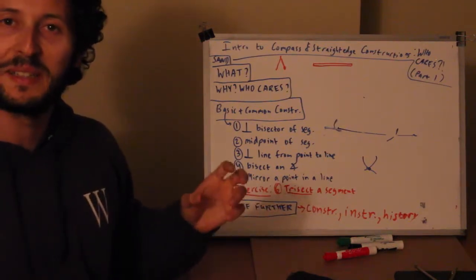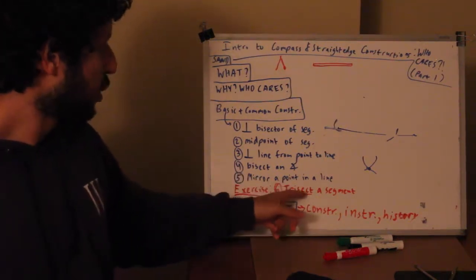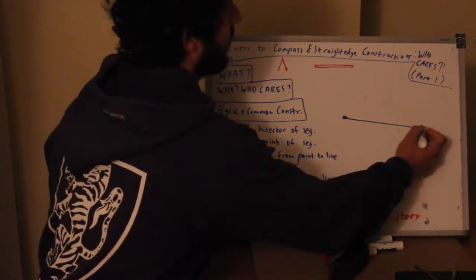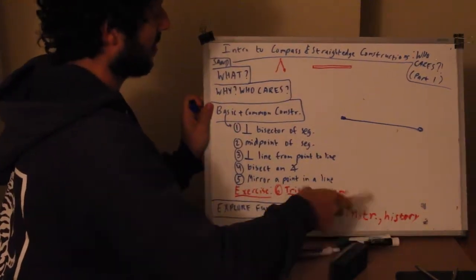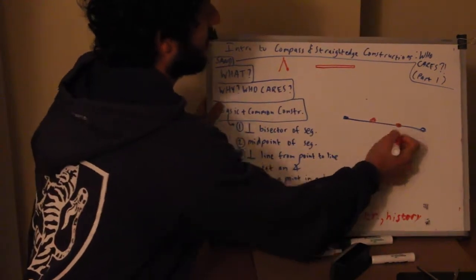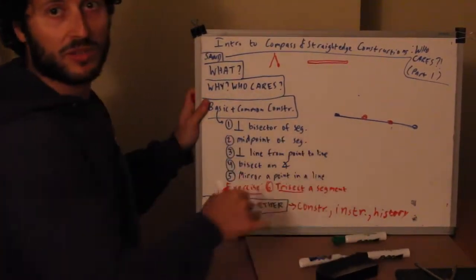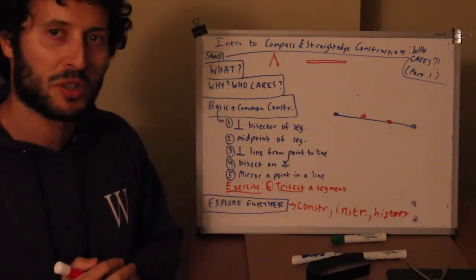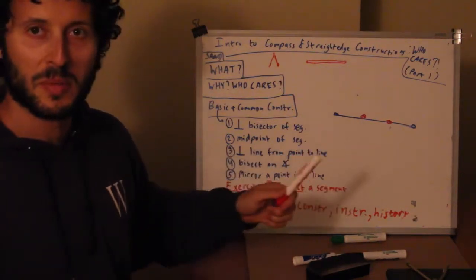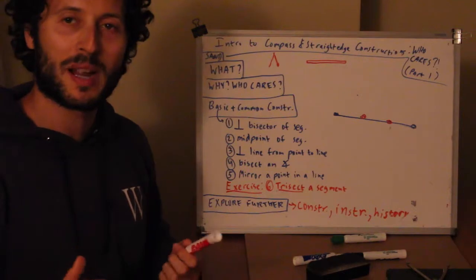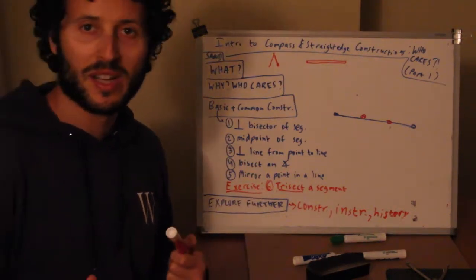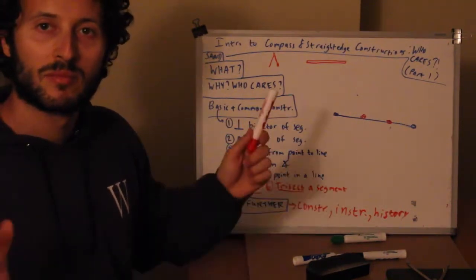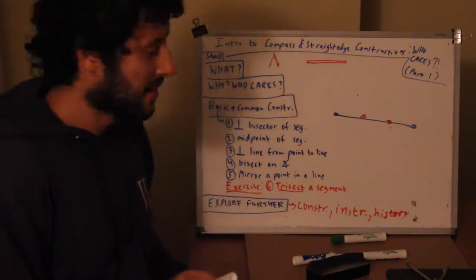I'm gonna leave you guys with a slightly cooler, more challenging exercise: trisect a segment. Given a segment, find a way to get these points with precision. Just to give you guys a heads up, there are several solutions - at least two or three ways if not more to do this. Think about it. I wouldn't recommend just googling it. You can if you're stuck or if you want to check alternate solutions, but I recommend you try your best.